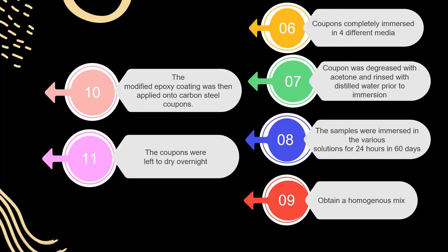The coupons were completely immersed in four different media: hydrochloric acid and sodium hydroxide solution for the chemical resistance test, while salt solution and water were used for the corrosion test. Each coupon was degreased with acetone and rinsed with distilled water prior to immersion in the test solution. The samples were immersed in the wear solution for 24 hours over 60 days.